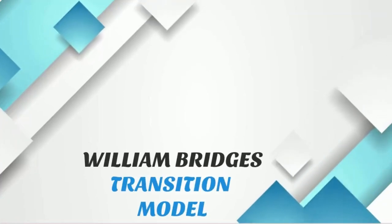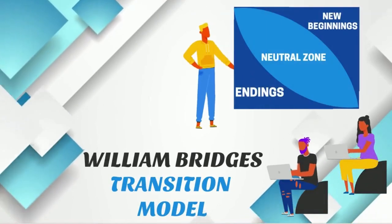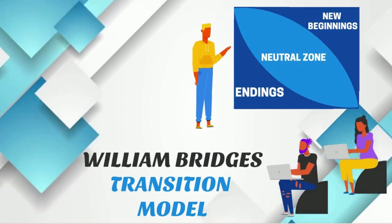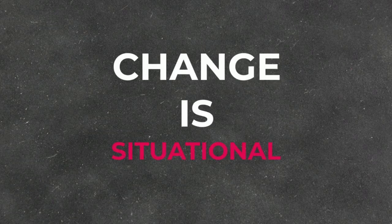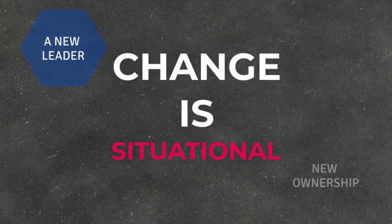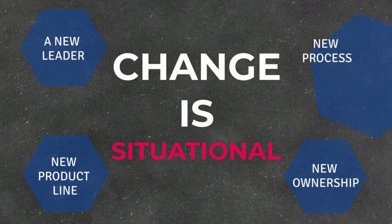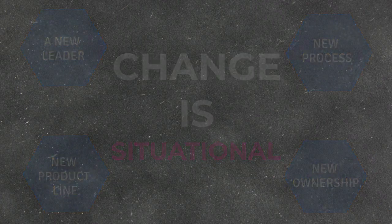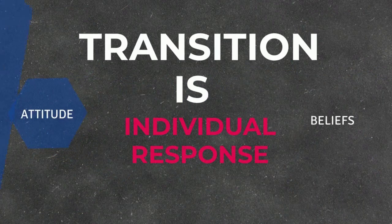The William Bridges Transitions Model was developed over 30 years ago. This model differentiates between change and transition. Change is situational — it's the event in business: a new leader, new ownership, new product line, or new process. Transition is a person's individual response to the change — the attitudes, beliefs, and actions they adopt in reaction to it.